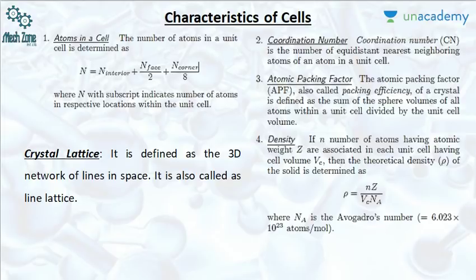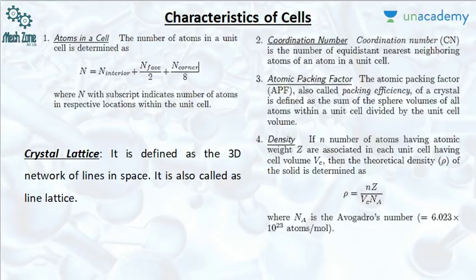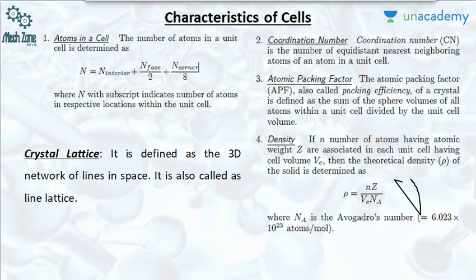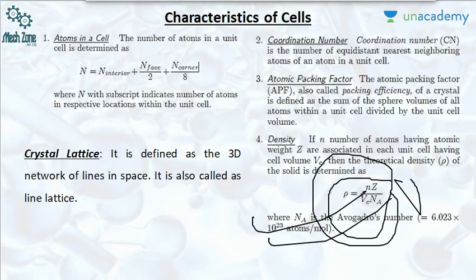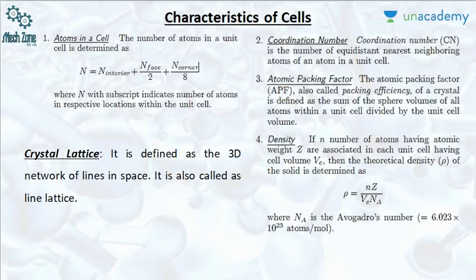The atomic packing factor, also called packing efficiency, is defined as the sum of the sphere volumes of all atoms within a unit cell divided by the unit cell volume. For density: if N is the number of atoms with atomic weight Z in each unit cell having cell volume V_C, then density = NZ / (V_C × N_A), where N_A is Avogadro's number, 6.023 × 10²³. This formula is quite important as numericals can be asked based on it.